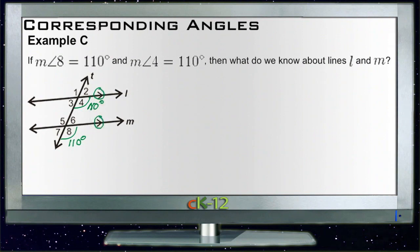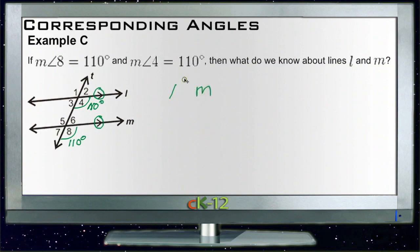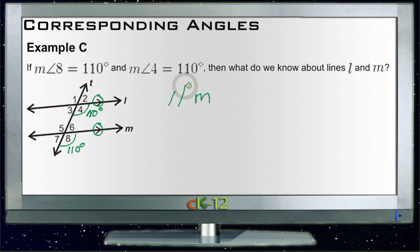This is because of the converse of the corresponding angles postulate. It tells us that if two parallel lines are crossed by a transversal then corresponding angles are equal, and it also tells us that if two lines crossed by a transversal have corresponding angles that are equal, the two lines must be parallel. So we know that line l is parallel to line m.